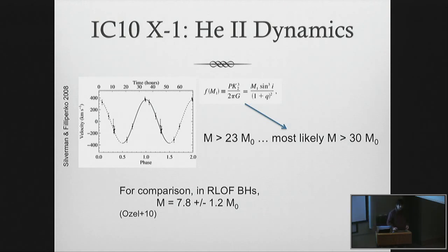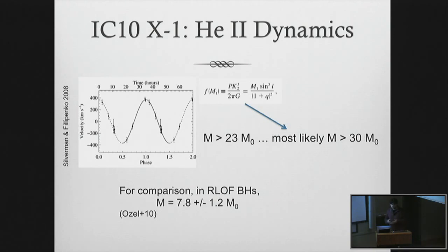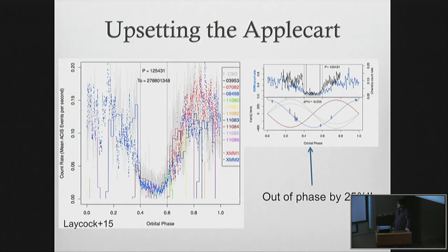Initially we proposed to obtain an unprecedented view of this system using Chandra and its amazing angular resolution, along with NuSTAR, which would provide the first real high-energy coverage of the system. You need that high-energy coverage to disentangle the Compton component. That Compton component is a nuisance for measuring the disk, and we need to accurately model it to get rid of it. However, just within the last year, the story on IC10 X-1 has completely changed - a really fascinating and still quite mysterious revelation.